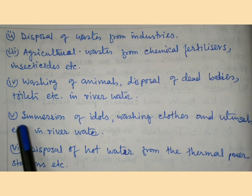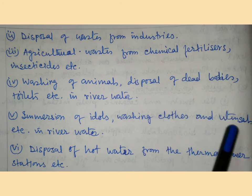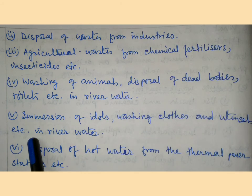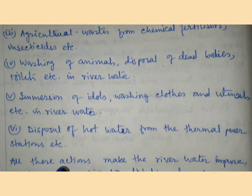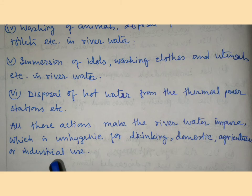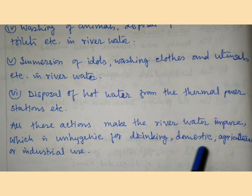Additional sources include: (5) immersion of idols, washing of clothes and utensils in the river, and (6) disposal of hot water from thermal power stations. All these actions make the river water impure, which is unhygienic for drinking, domestic, and agricultural or industrial uses.